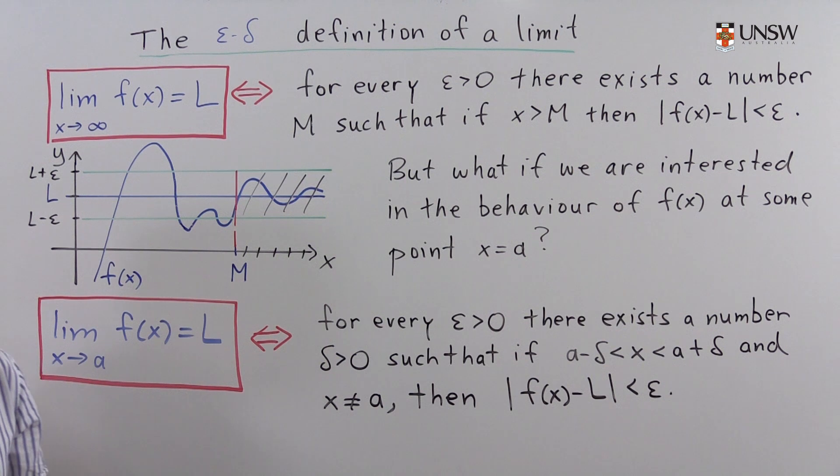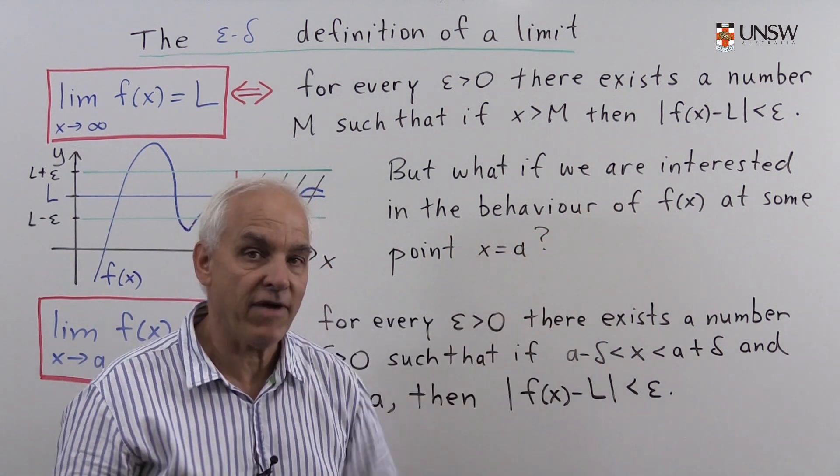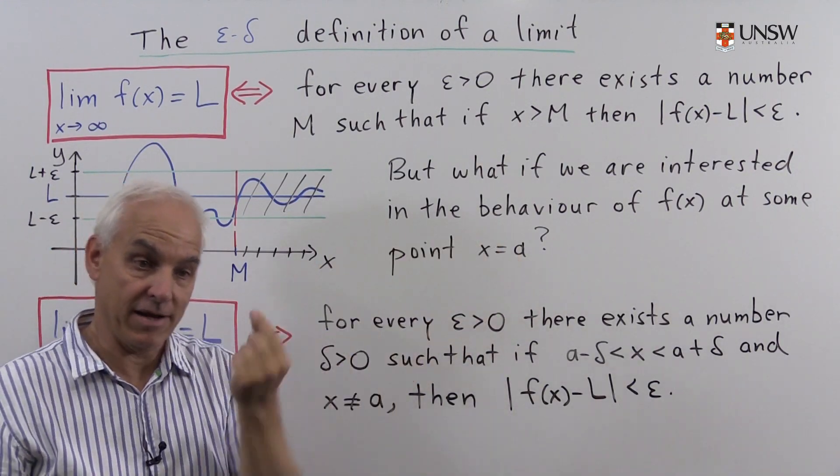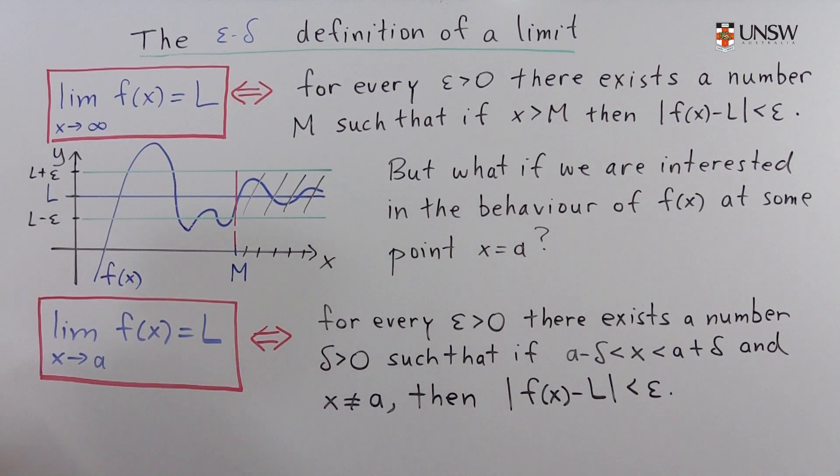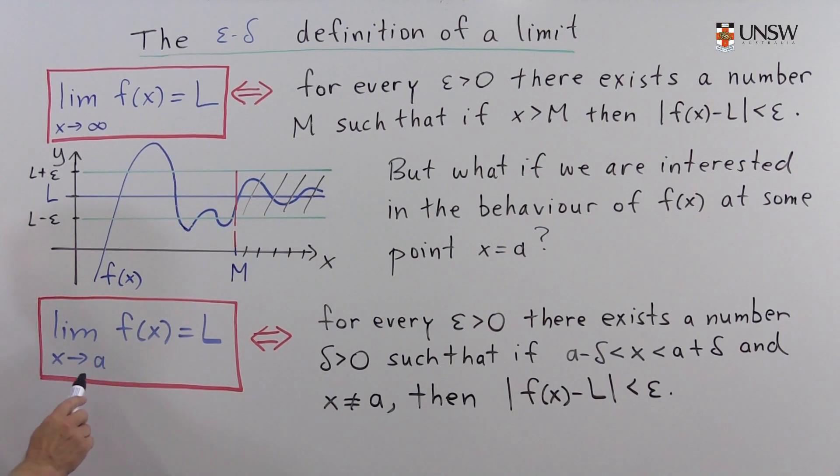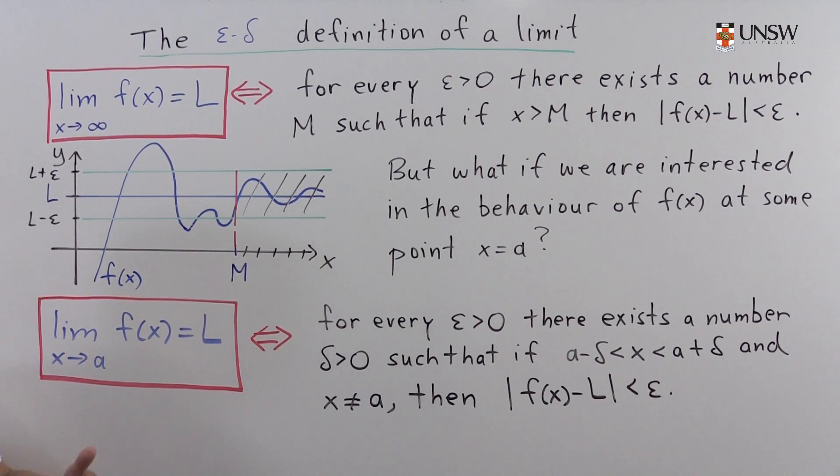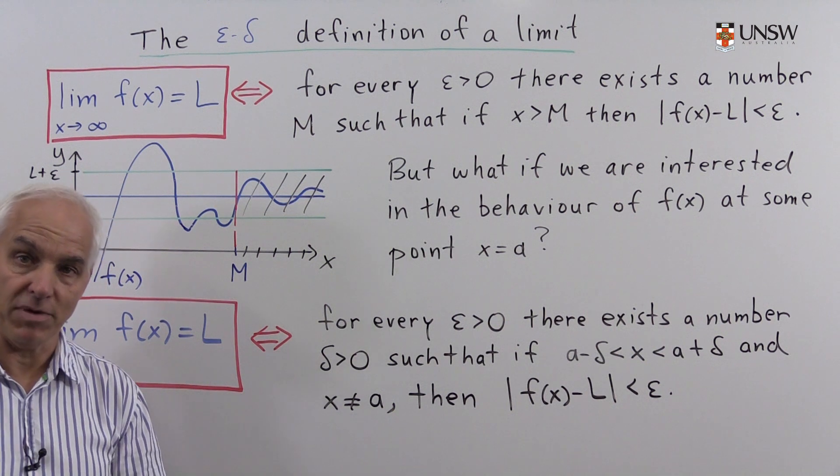But often we're interested in the situation of thinking about the behavior of a function f of x at some fixed point x equals A. In other words, not at infinity, but at a particular point like x equals 3. So there's a corresponding definition of what it means for the limit of a function f of x as x approaches A to equal L. And this is a very important foundational definition for calculus because the notion of continuity is built on it. The notion of differentiability is also built on this.